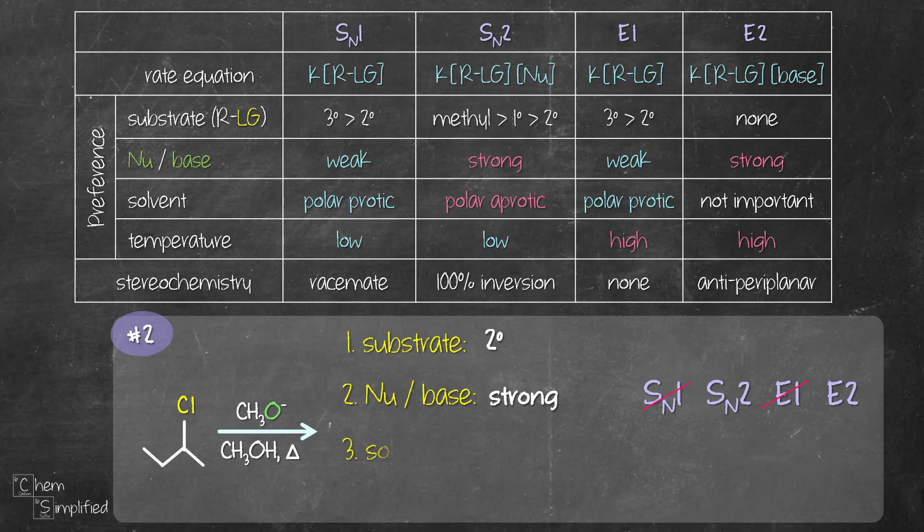Next, methanol, the solvent, is polar protic. That means E2 is going to dominate over SN2. Let's keep going and look at the temperature next. Since there's heat indicated, that confirms E2 is going to dominate over SN2. We're gonna get a mixture of products from SN2 and E2. However, the major product is going to come from E2 mechanism.